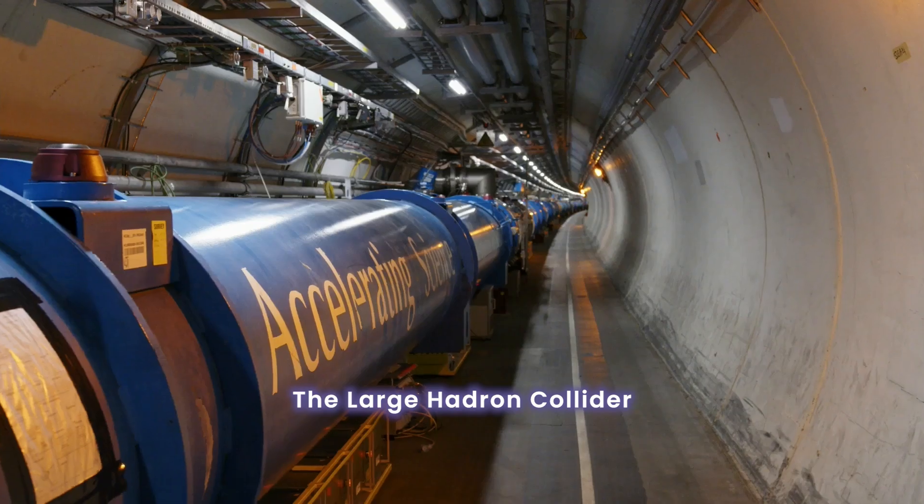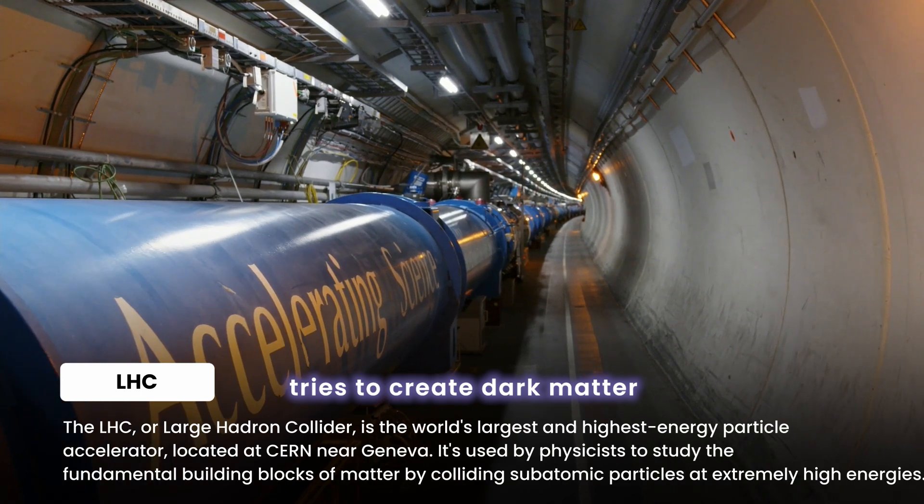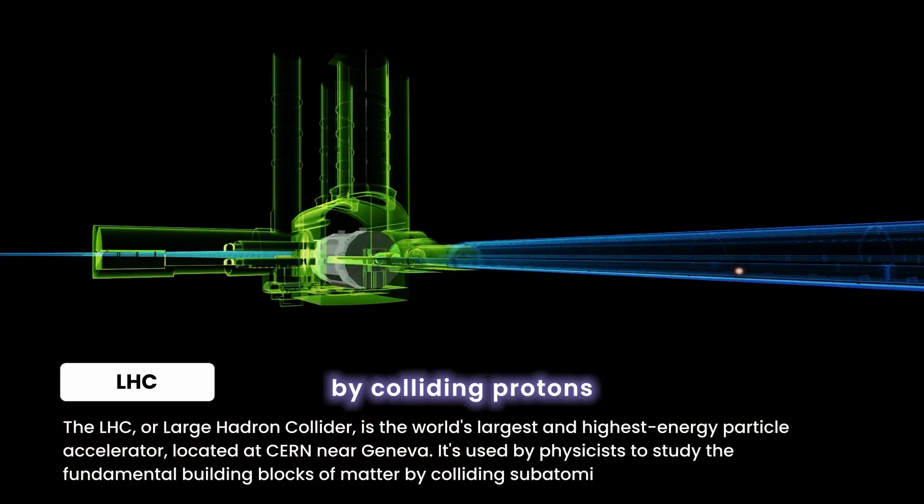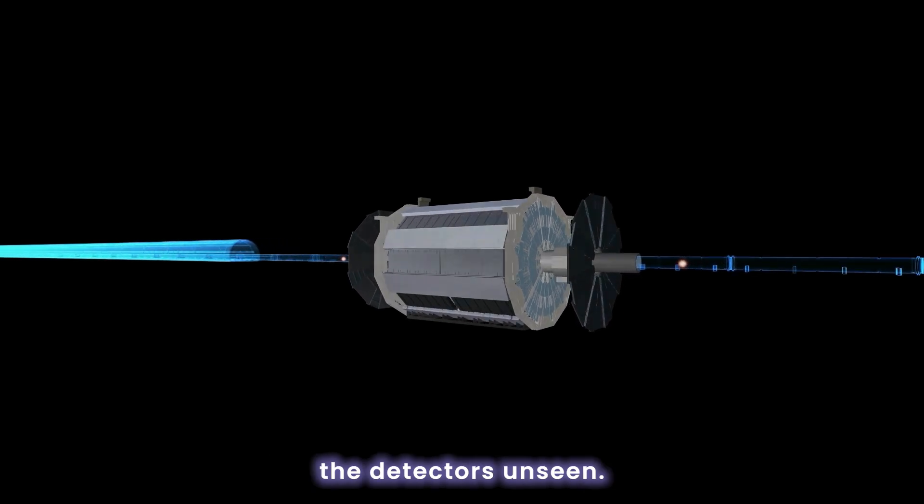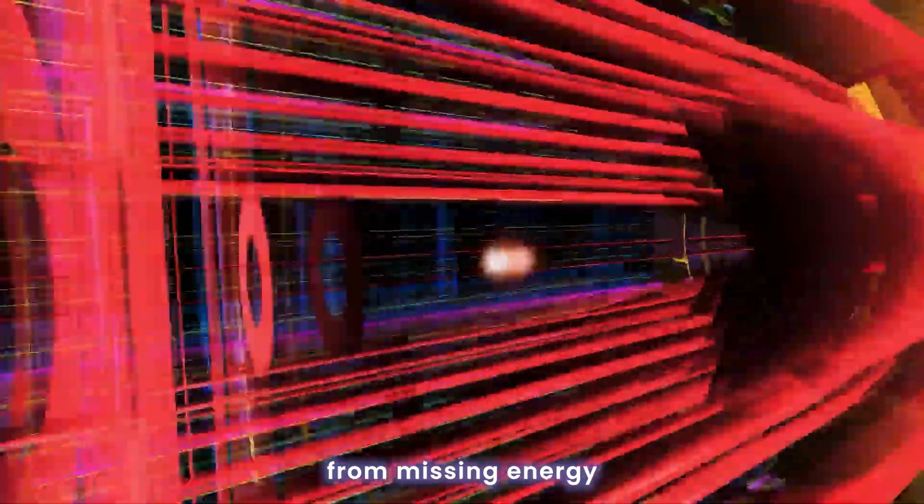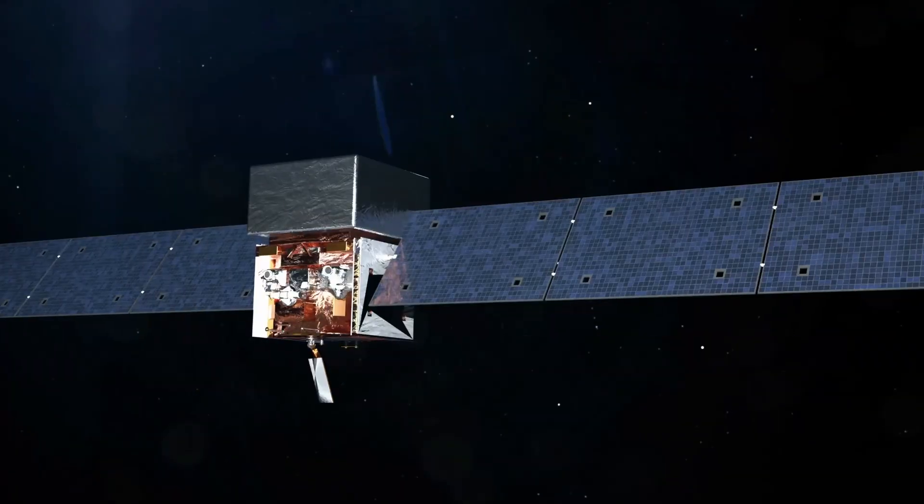At CERN in Switzerland, the Large Hadron Collider tries to create dark matter by colliding protons at extremely high energies. While dark matter particles would escape the detectors unseen, their presence could be inferred from missing energy or unexpected signals.